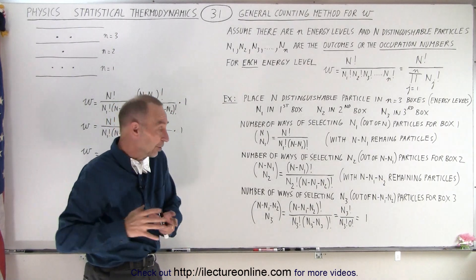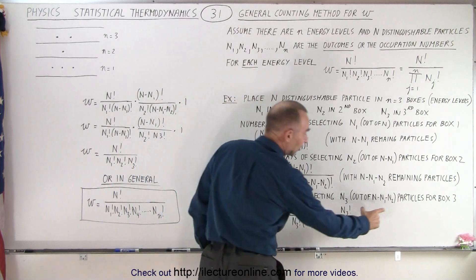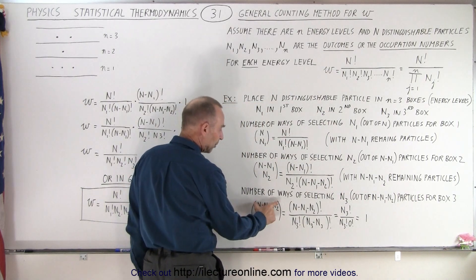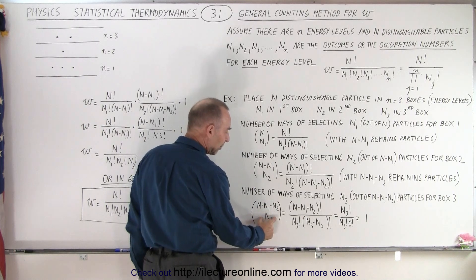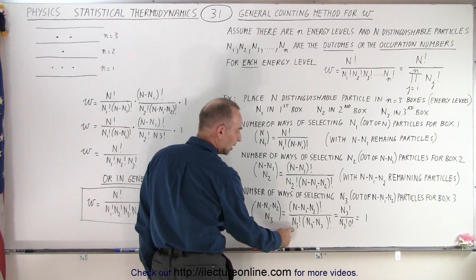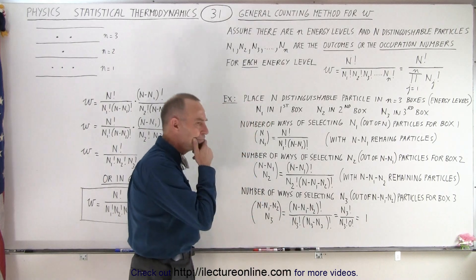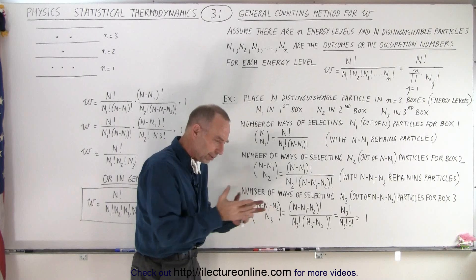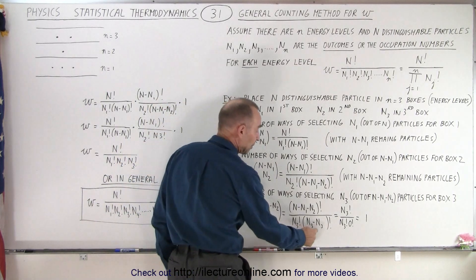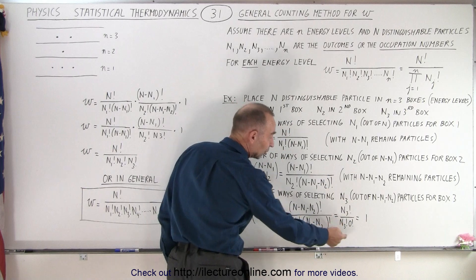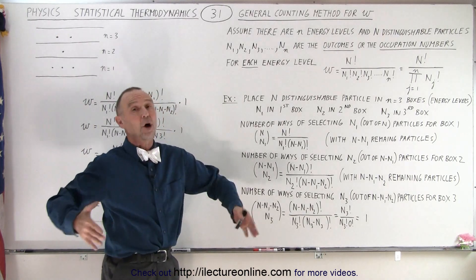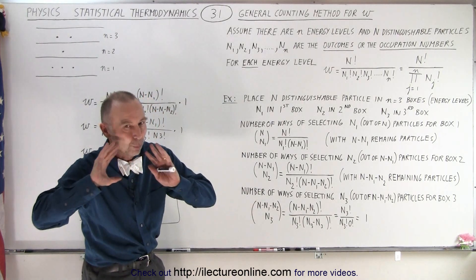How do we select the number of particles in the third box? We have N minus n1 minus n2 particles remaining for box 3. We take the total remaining factorial, divided by what we put in box 3 factorial, divided by what's remaining. After putting particles in box 1, box 2, and whatever is left in box 3, there will be no particles remaining — we have n3 minus n3, or zero particles remaining. There's only one way to do that last assignment.